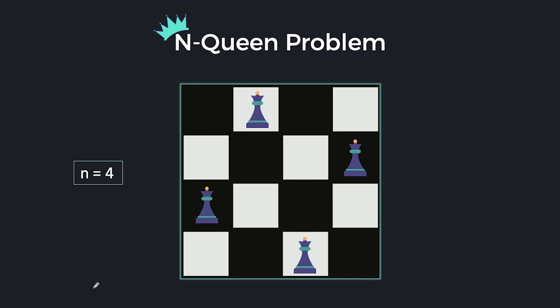Attack each other means that if you play chess, you will know that the queen can move in any direction: forward, backward, right, left, and even diagonally. So attack means that the two queens don't kill each other. Here this example is for N is equal to 4.